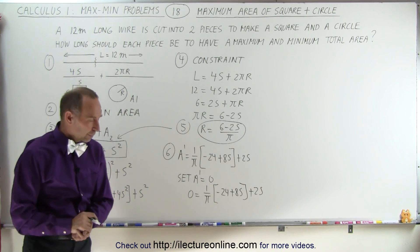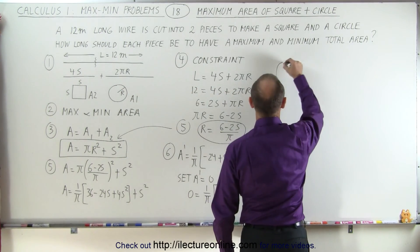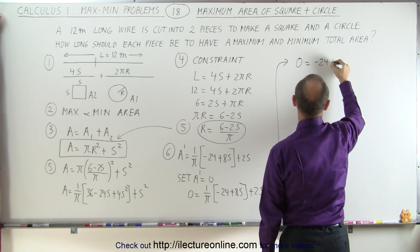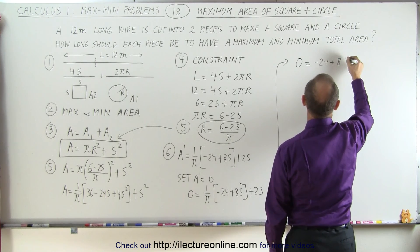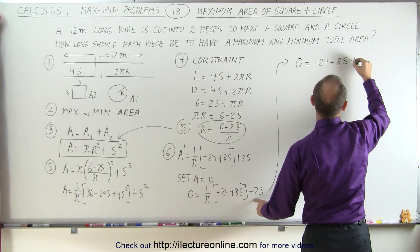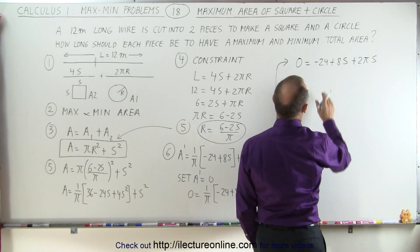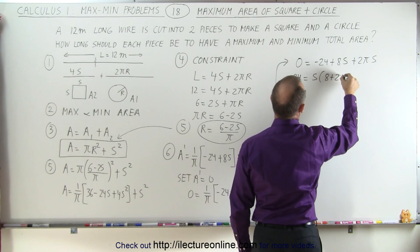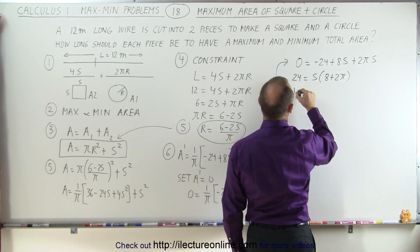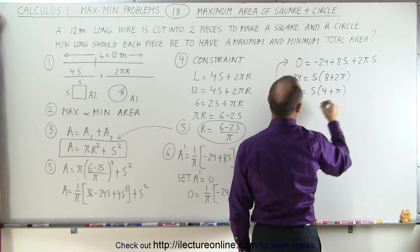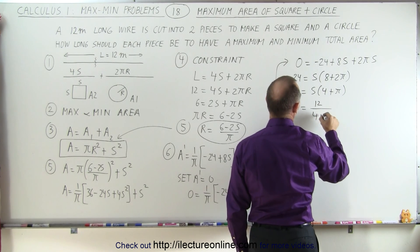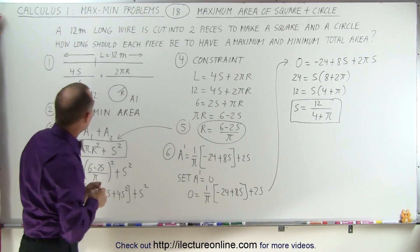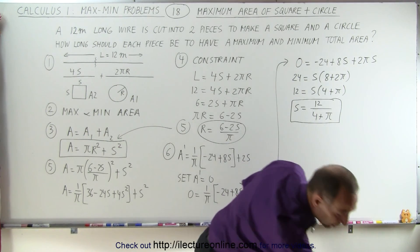Multiplying both sides by π gives 0 = −24 + 8s + 2πs. Bringing the constant to the other side and factoring out s: 24 = s(8 + 2π). Dividing everything by 2 gives 12 = s(4 + π), so s = 12/(4 + π). That's approximately s ≈ 1.68 meters — the side length of the square.